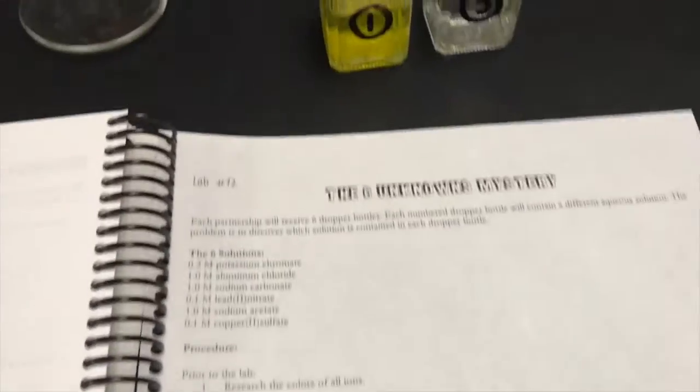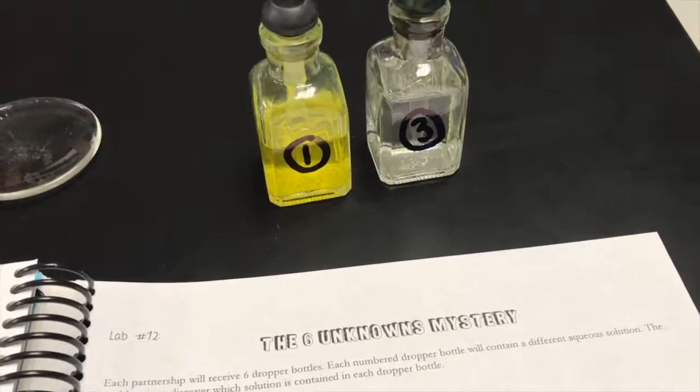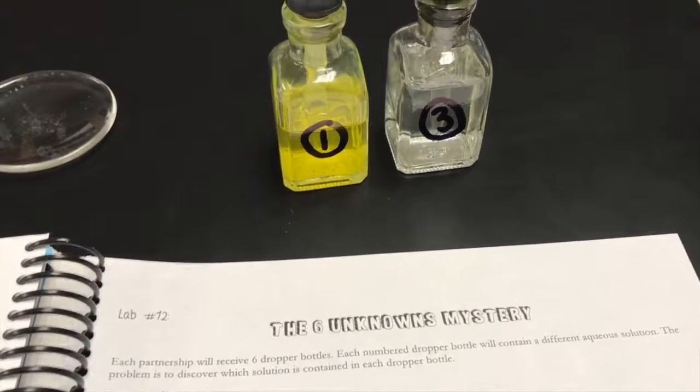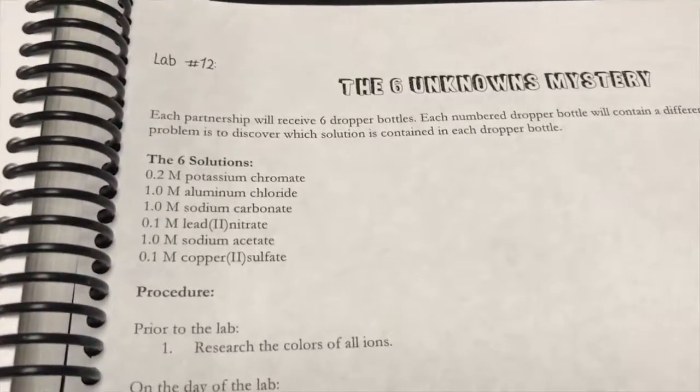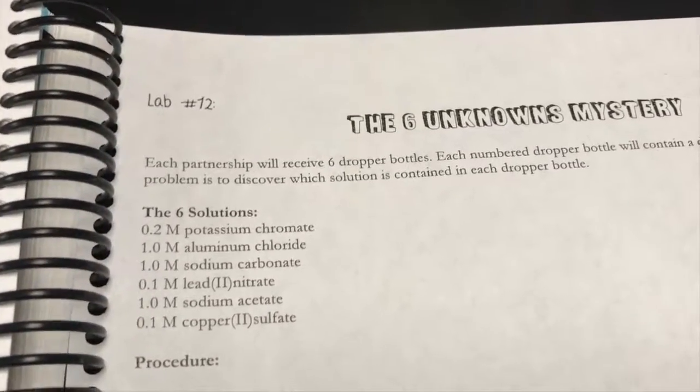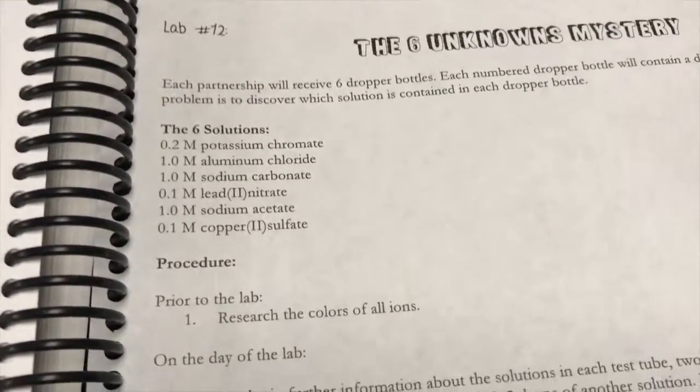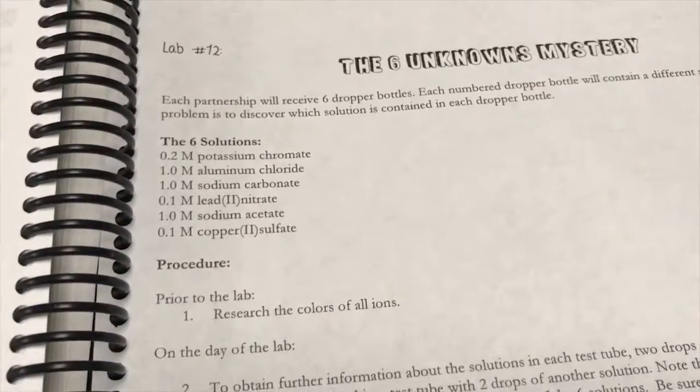The first thing you should do for this lab is notice that some of the solutions are going to be colorful. Before you start the lab, research the color of these six solutions. If one of them has a very specific or distinctive color, then you can figure out its identity without even having to do a reaction, so you'll be able to figure out a couple of these simply based on their color.